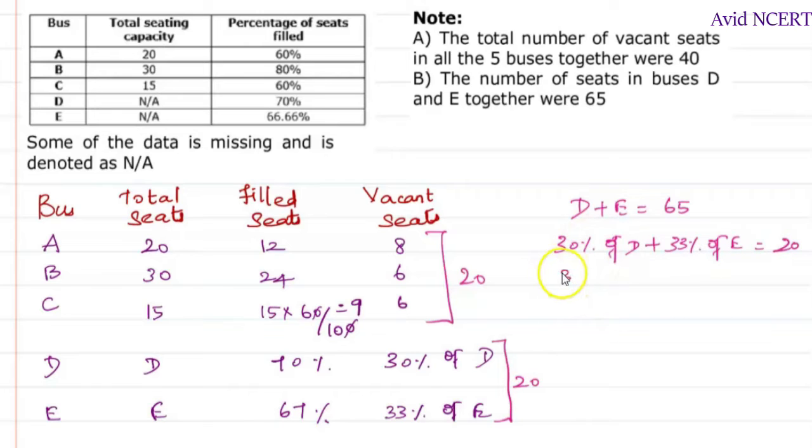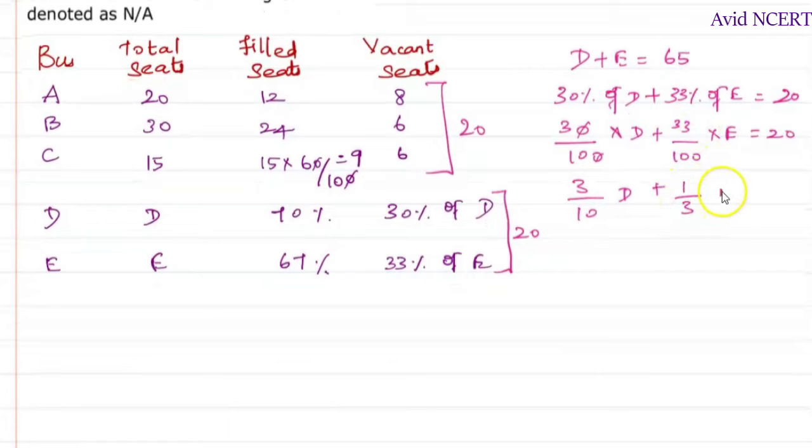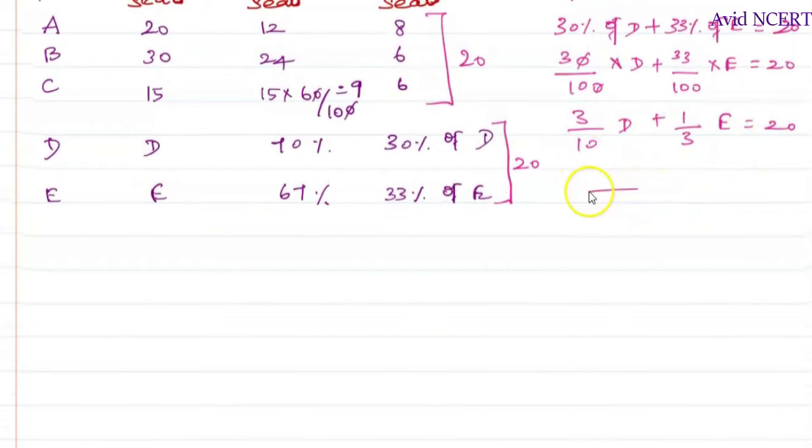So this can be simplified as 3 by 10 D plus 33 by 100, which is approximately 1 by 3 E, equals 20. The LCM for 10 and 3 is 30. So 10 times 3 is 30, 3 times 3 is 9D, plus 3 times 10 is 30, 10 times 1 is 10E equals 20. So which is 9D plus 10E equals 30 times 20 is 600.